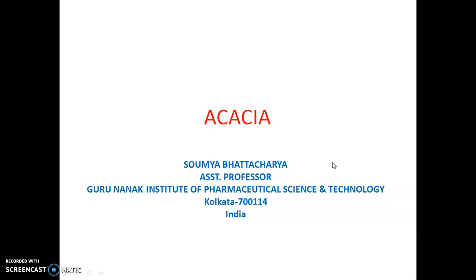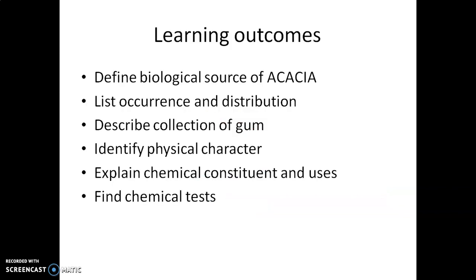After viewing this presentation, we will be able to define the biological source of Acacia, list occurrence and distribution of Acacia, describe the collection of this particular gum, identify physical characters, explain chemical constituents and uses, and also find chemical tests and adulterations.